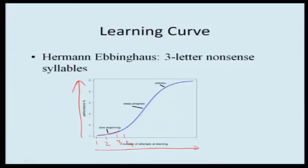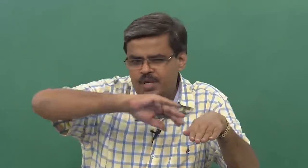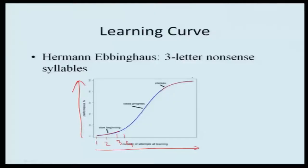In the beginning, learning is slow, and then suddenly there is a steep progress — you learn very fast. After a particular level, you reach a point of stability called the plateau state, where there is no more significant enhancement in learning. So: slow beginning, steep progress, and then reaching the plateau state — that is what is called the learning curve, given by Hermann Ebbinghaus.